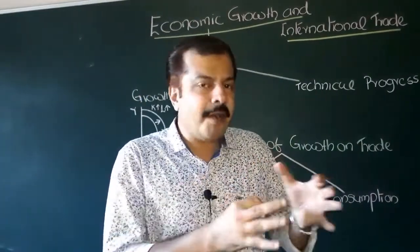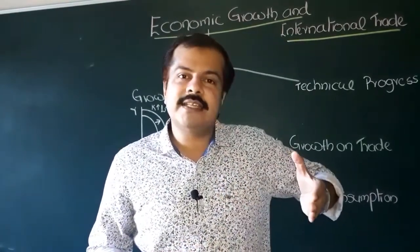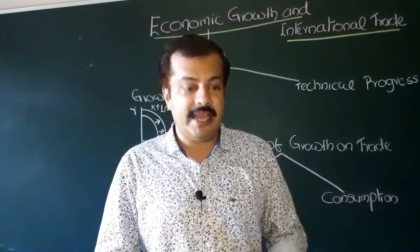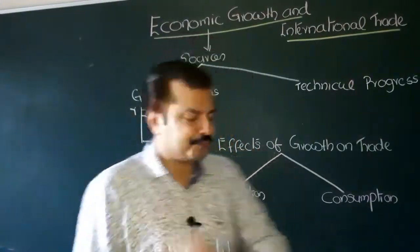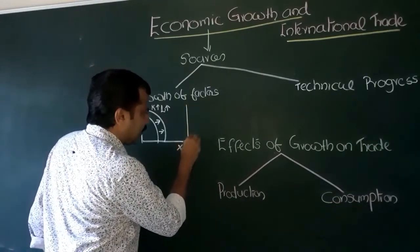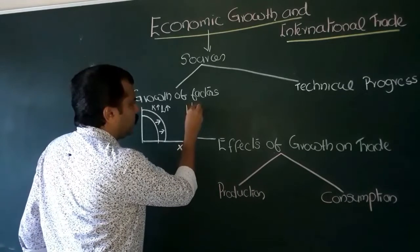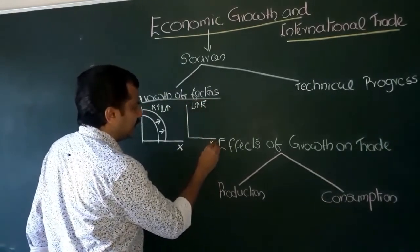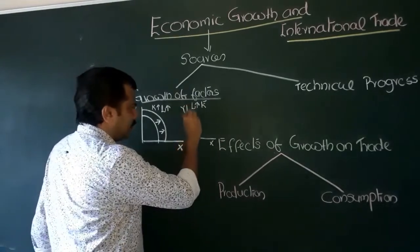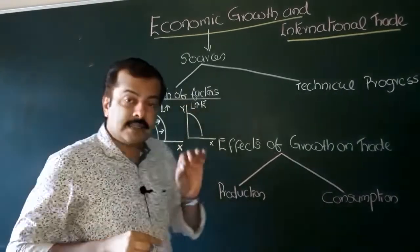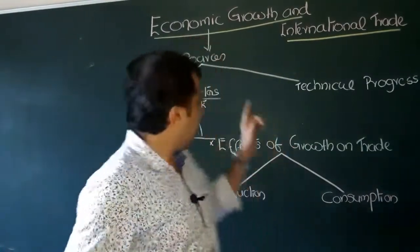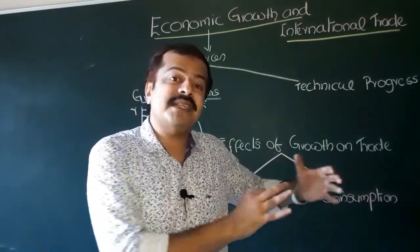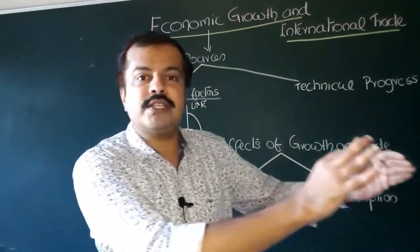Things are a bit more complex when we explore the case where there is an increase in the endowment of only one factor of production. That is, there is an increase in the endowment of labor with capital remaining constant. Let us explore when the quantity of labor increases while capital remains the same. In this case, the production possibility curve will shift towards the right, but it will have an asymmetrical shift.